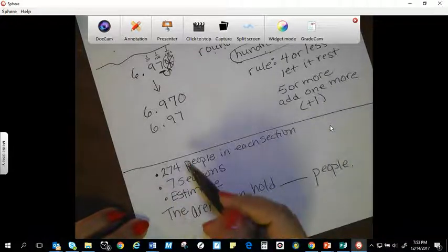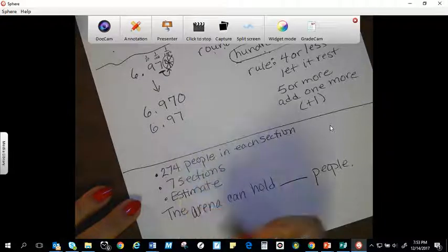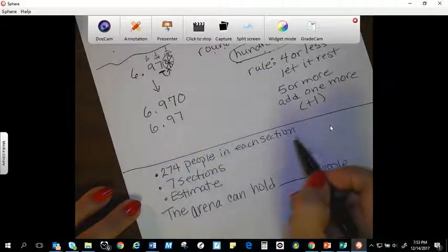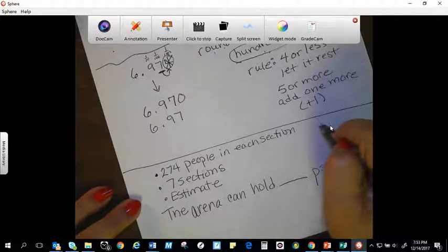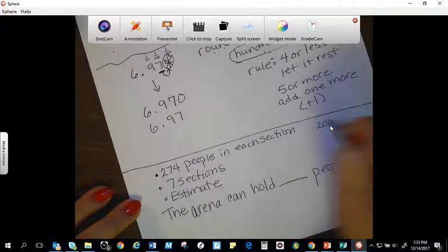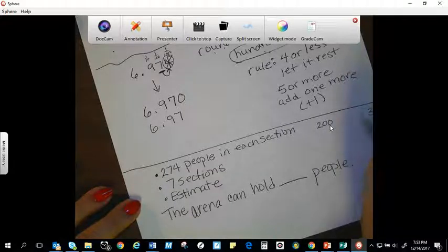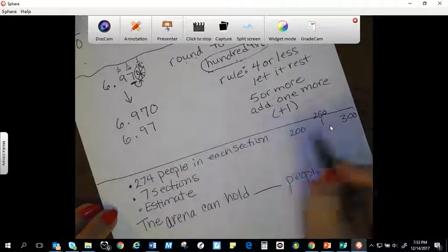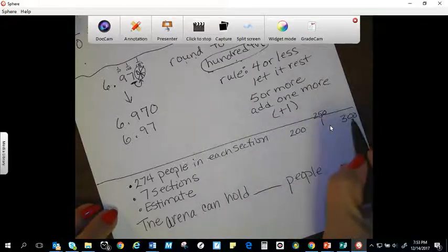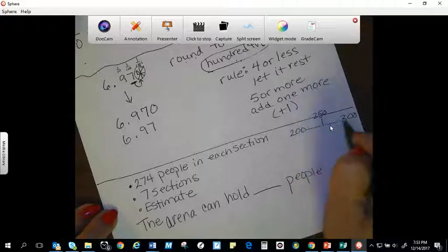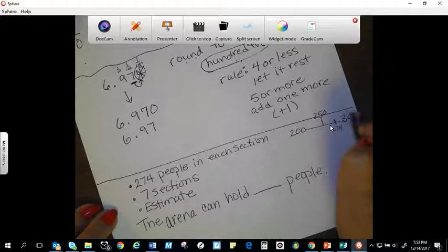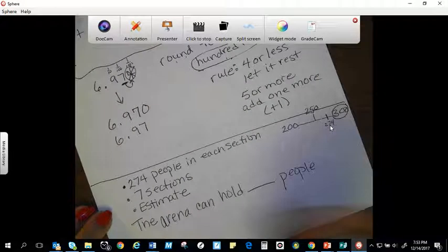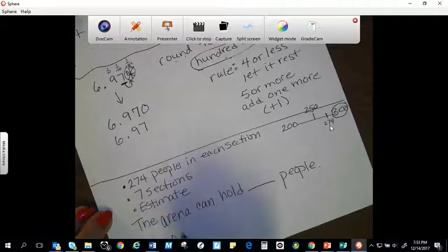Now I am going to estimate, so I'm going to round my 274, which is going to be closest to, if I had 200 to 300, and in the middle, it's 250. What is 274 closest to? Is it closest to 200 or 300? So if I had to place this on a number line, my 274 is going to go about right here, right? So it's closest to 300. So I'm going to have 300 times 7.